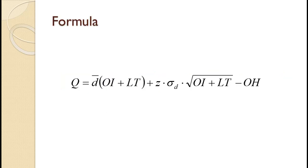The formula shown on the slide: the order quantity Q equals the average daily demand D-bar times the protection period, plus the Z score for the desired service level times the daily standard deviation times the square root of the protection period, minus the on-hand quantity. The first part of the formula represents the average usage during the order interval and lead time — in other words, the average usage during the protection period.